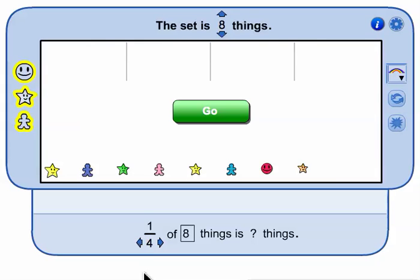The tool is ready to find 1 4th of a set of 8 things. Can these 8 things be partitioned into 4 subsets of equal size? Think, then when ready click go.